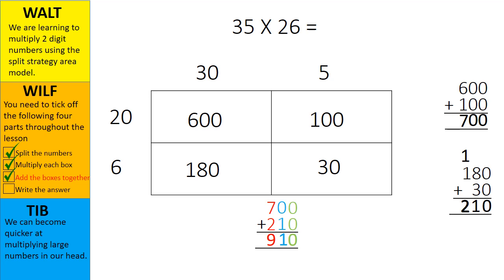I have now solved the problem, 35 multiplied by 26 equals 910. I can write my answer to the question at the top of the page. Now I can tick off stage 4 on the what I'm looking for checklist.